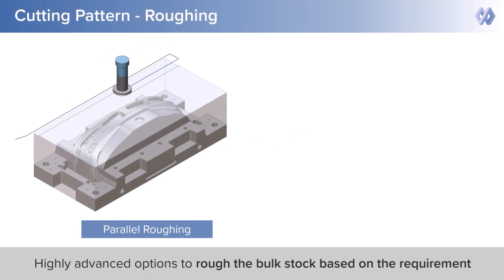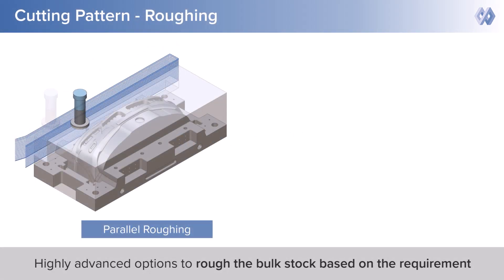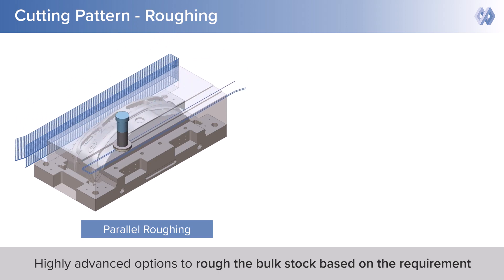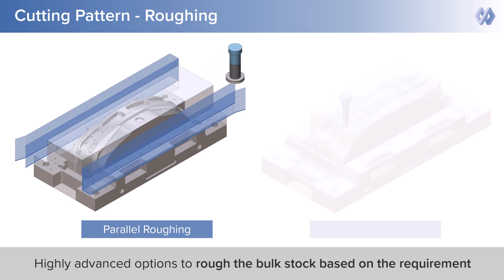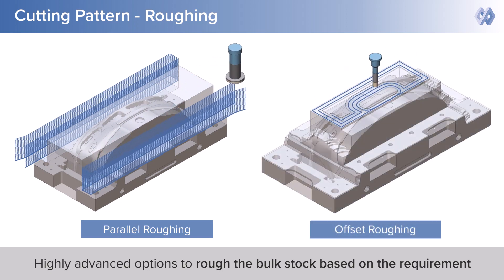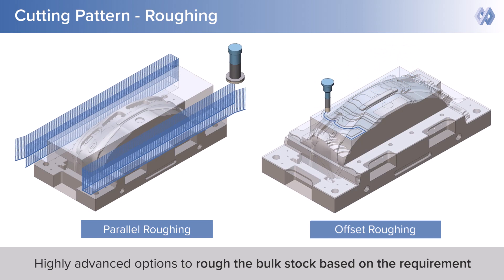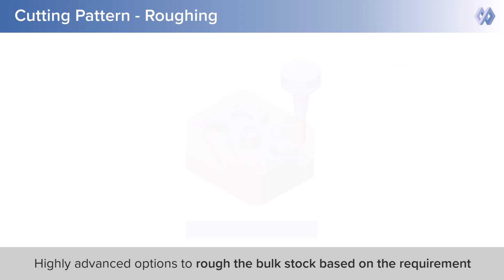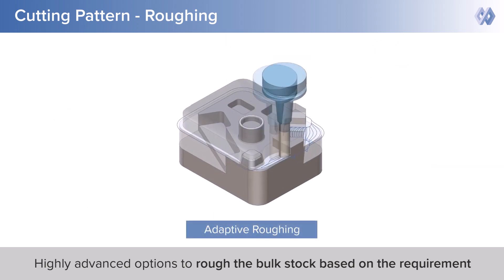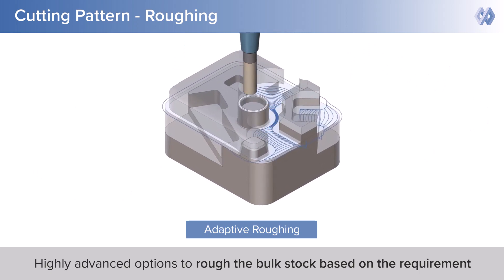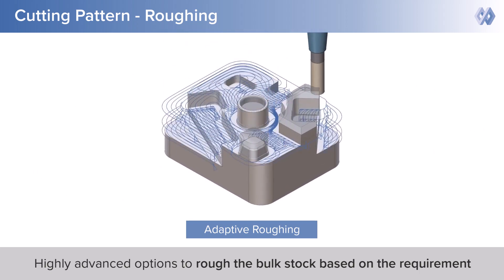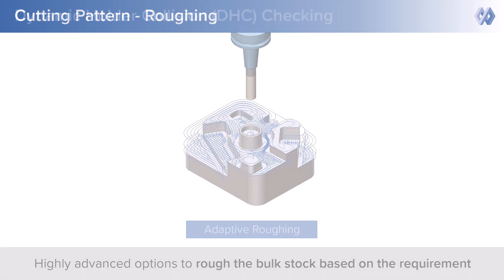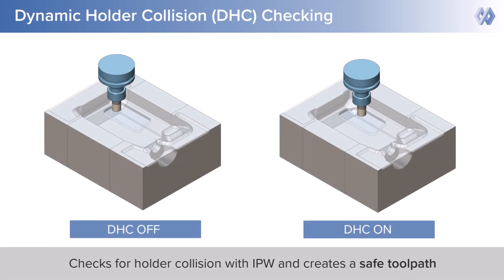ModuleWorks 3-axis solution provides a comprehensive range of 3-axis roughing. Using the parallel cut strategy, we can perform machining along the X-axis, Y-axis, or any other angle in the XY plane. It can be used on less advanced machines also. Offset roughing generates offset passes from the machining surface profile and is designed for modern controllers. Adaptive cut pattern keeps a constant material removal rate, MRR, which maintains constant cutting forces and improves the tool life.